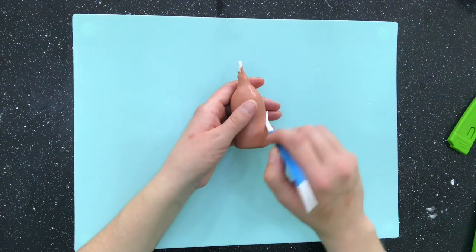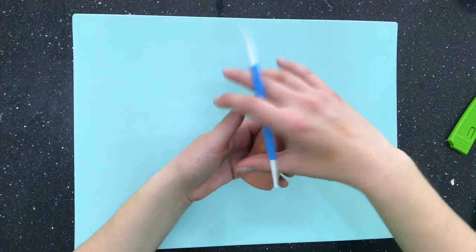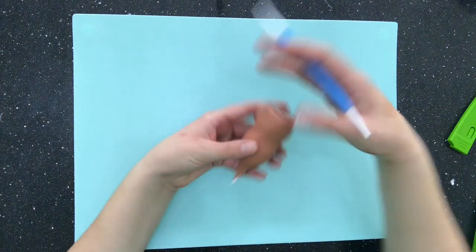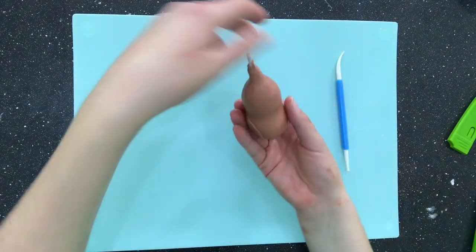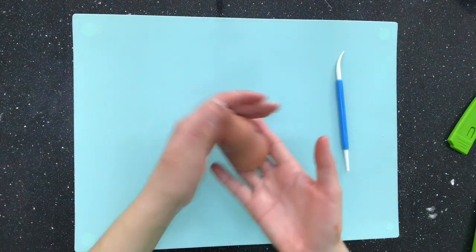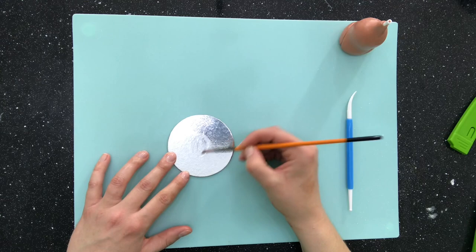Then I take my sculpting tool and draw in almost two semi-circles, one on either side for the thighs. I'm going to stick the body to a little cake card just using a little bit of water for glue.